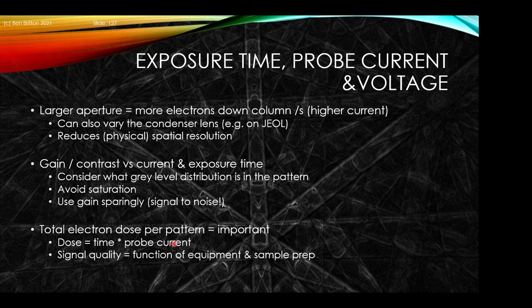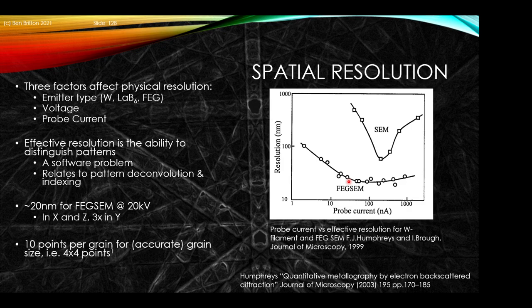Fundamentally what we care about is the total electron dose per pattern — that's what's really important. This is time times probe current: the dose being used to generate the diffraction pattern, with geometry and hardware determining how well you capture it. The signal quality is a first-order function of sample prep; second-order is how good the equipment is set up and how well you're operating it. The spatial resolution is controlled by the emitter type: typically a FEG will have a sharper resolution, somewhere of the order of 10 to 100 nanometers. The FEG is also relatively insensitive to probe current, whereas a tungsten filament SEM has a sharper trade-off and is also related to the probe current.